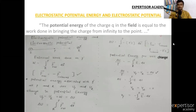First, the electrostatic potential energy definition. The potential energy of a charge Q in an electric field is equal to the work done in bringing the charge from infinity to the point.